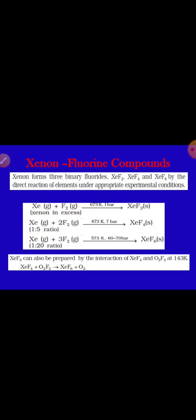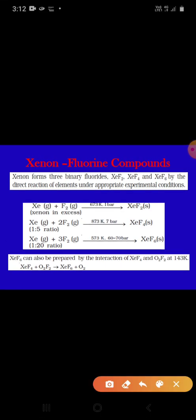Xenon fluorine compound. Dear student, these are the compound of xenon with fluorine. So if you go through these one, you will find that xenon form three binary compounds. You know student, what are binary compounds? Binary means a compound made up of two elements. One is for example xenon and another is fluorine. If the first compound, if you talk about xenon fluoride, then it is XeF2, another compound is XeF4 and next one is XeF6 by the direct reaction of element under appropriate experimental condition.